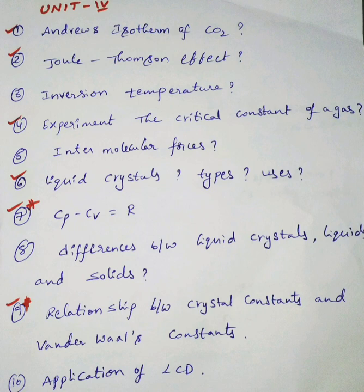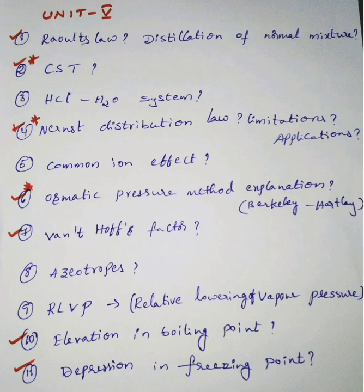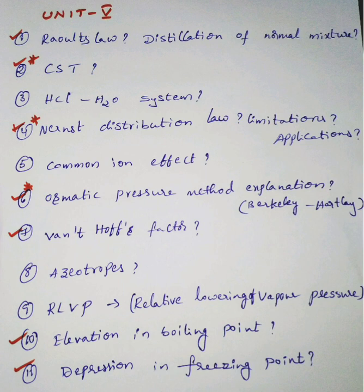In unit five, we have 11 questions total, out of which seven are very importantly asked. CST, Nernst distribution law, and osmotic pressure are quite frequently asked. Raoult's law, distillation of normal mixture, H2O-NaCl systems, CST, common ion effect, and azeotropes are very very important. The last questions — elevation in boiling point and depression in freezing point — are frequently asked.